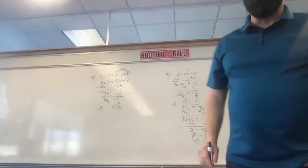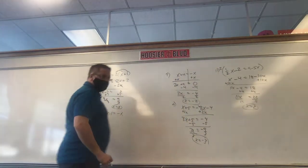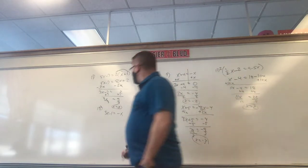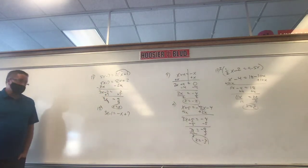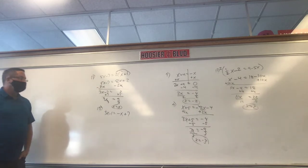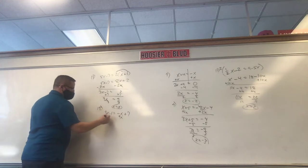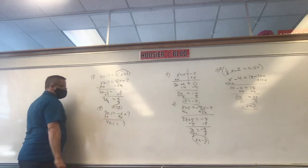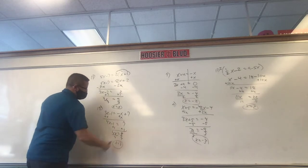3x minus 1 equals negative x plus 7. How is this question different than the other problems? It's not — it's the same thing, actually easier because we don't have to distribute. Add x: 3x and x is 4x. Minus 1 equals 7. Plus 1 to each side. 4x equals 8. Divide by 4, x equals 2.